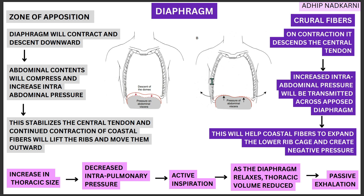Now looking at the crural fibers: the zone of apposition fibers contract and pull the diaphragm down, with the central tendon partially stabilized by the rising intra-abdominal pressure. When the crural fibers — attached to the vertebra — also contract, the diaphragm descends further. This builds intra-abdominal pressure even higher, and that increased pressure is transmitted across the entire opposed diaphragm, stabilizing the central tendon even more firmly.